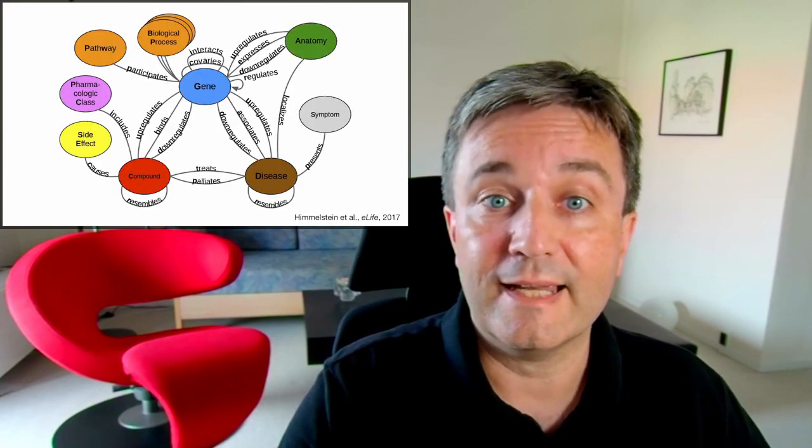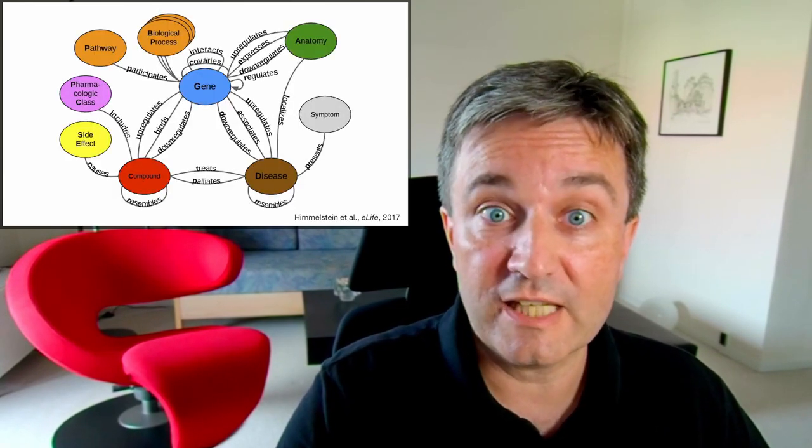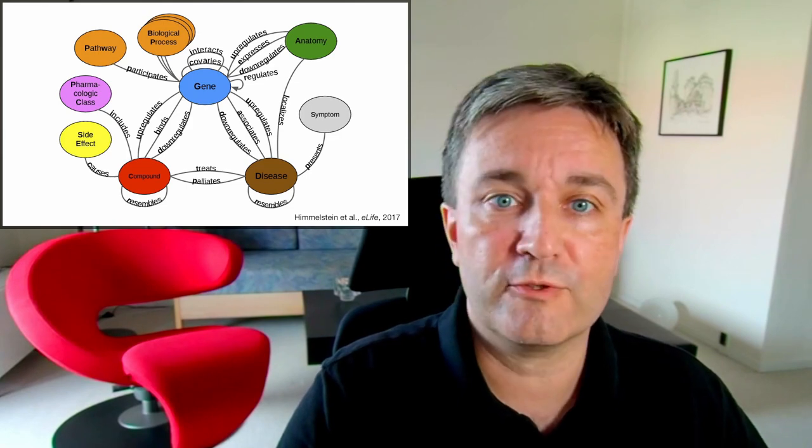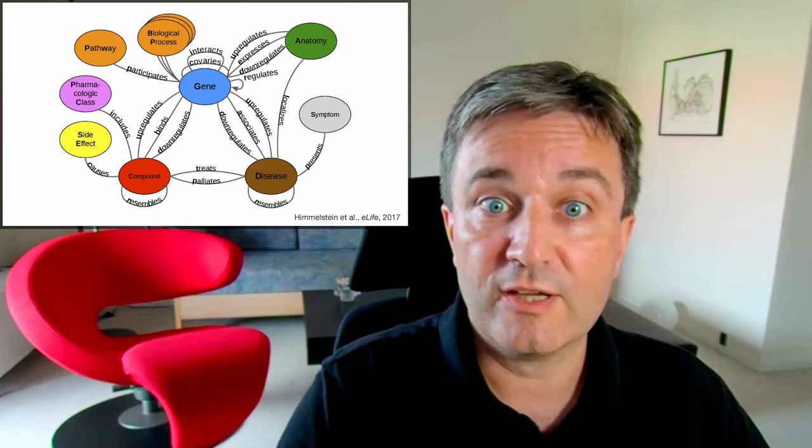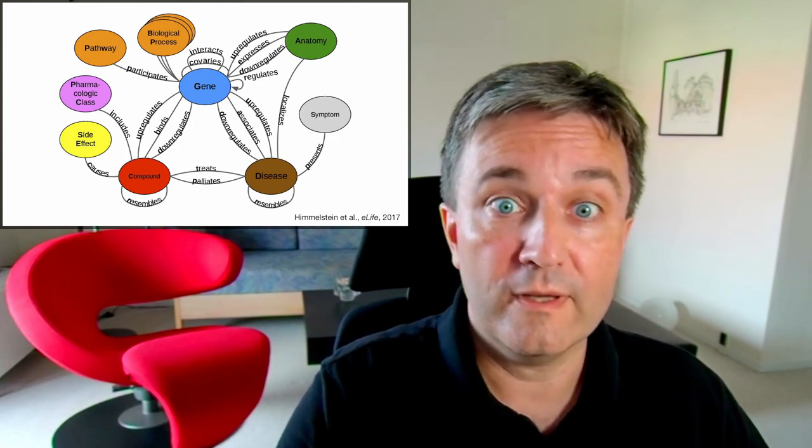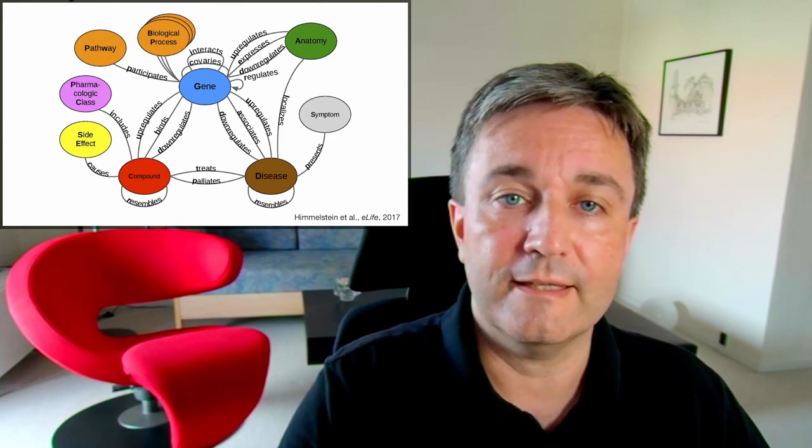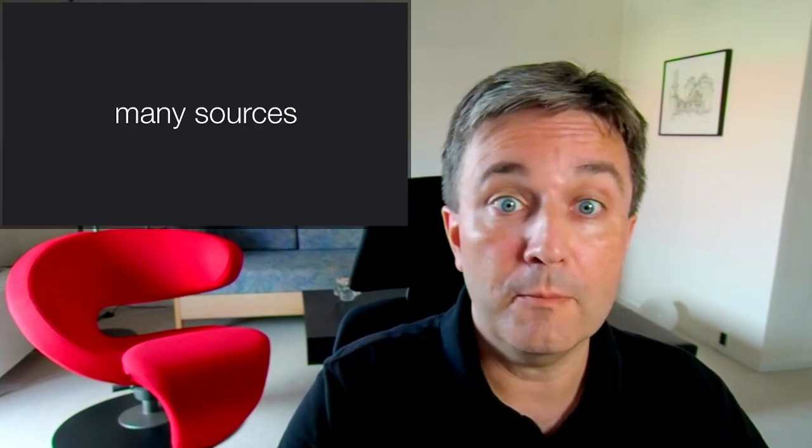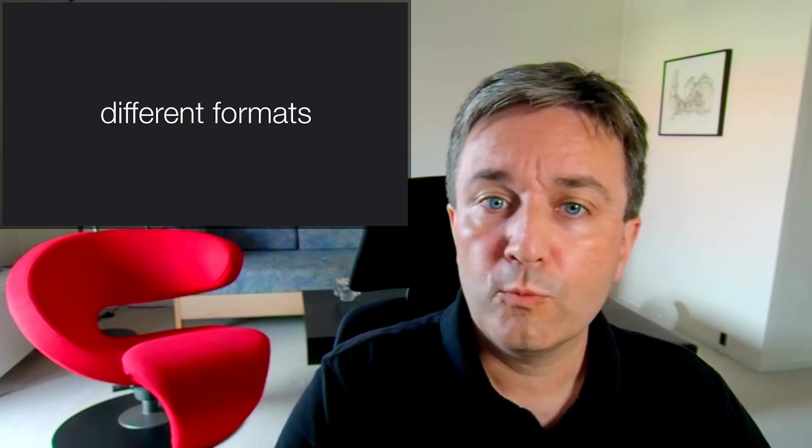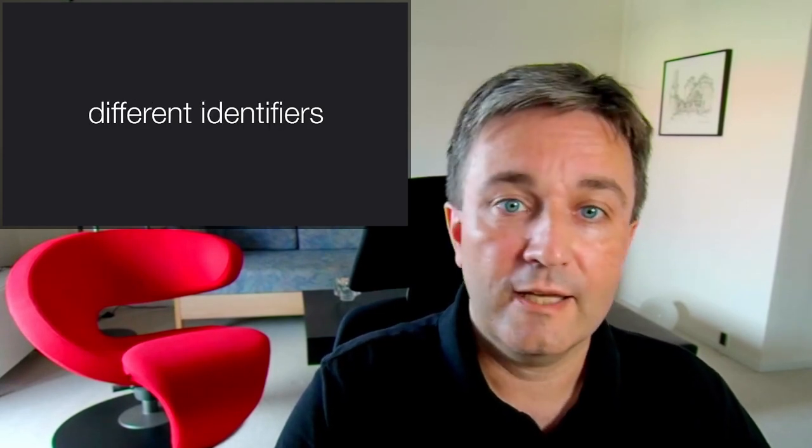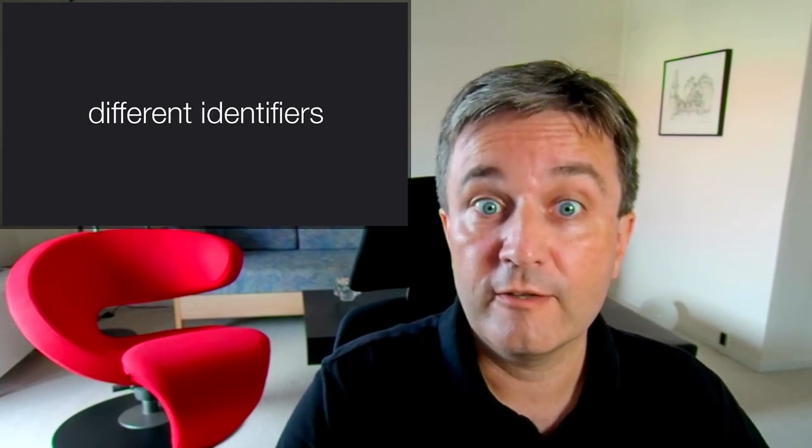The result would look something like this, where you have genes and diseases and drugs and many other types of concepts, with many types of relations between them, all in one network. The challenge of building this is that you need to combine many sources of data, which all come in different formats and use many different identifiers for the same things.